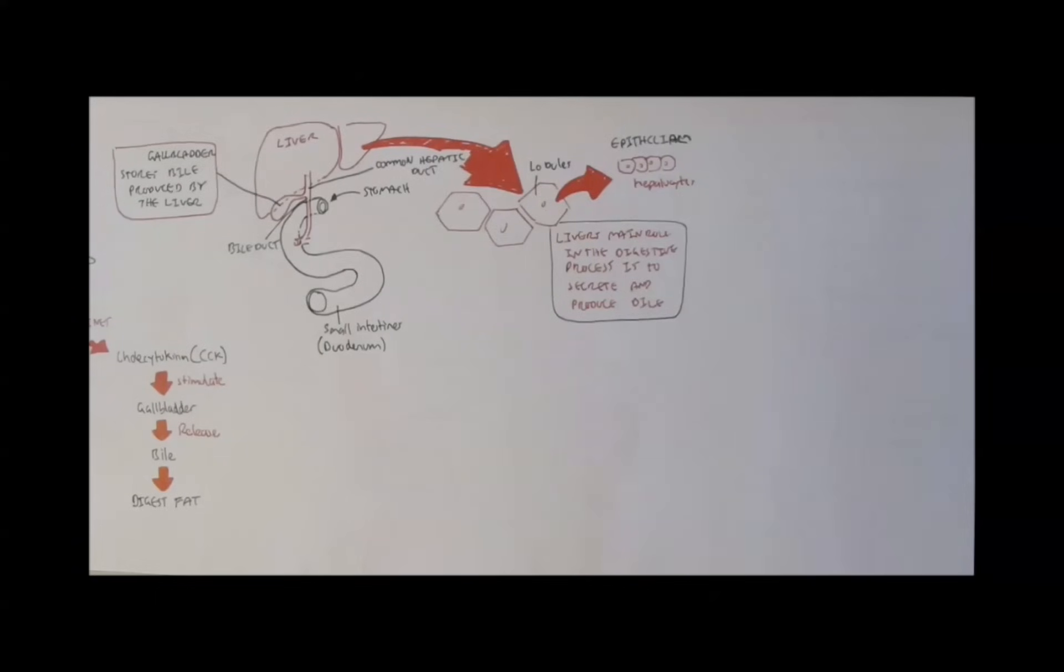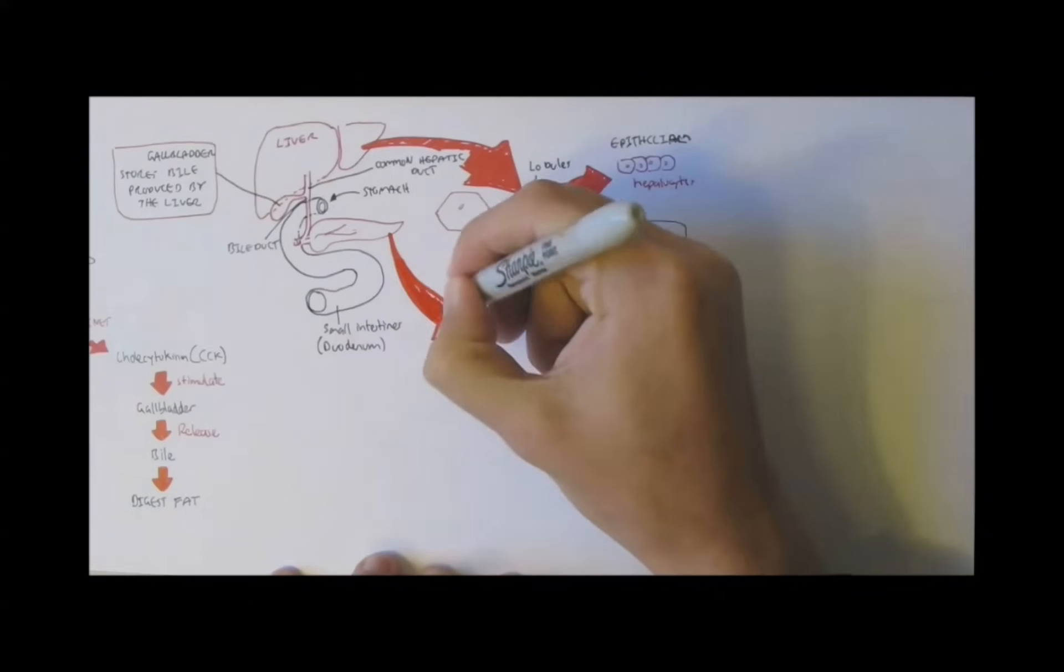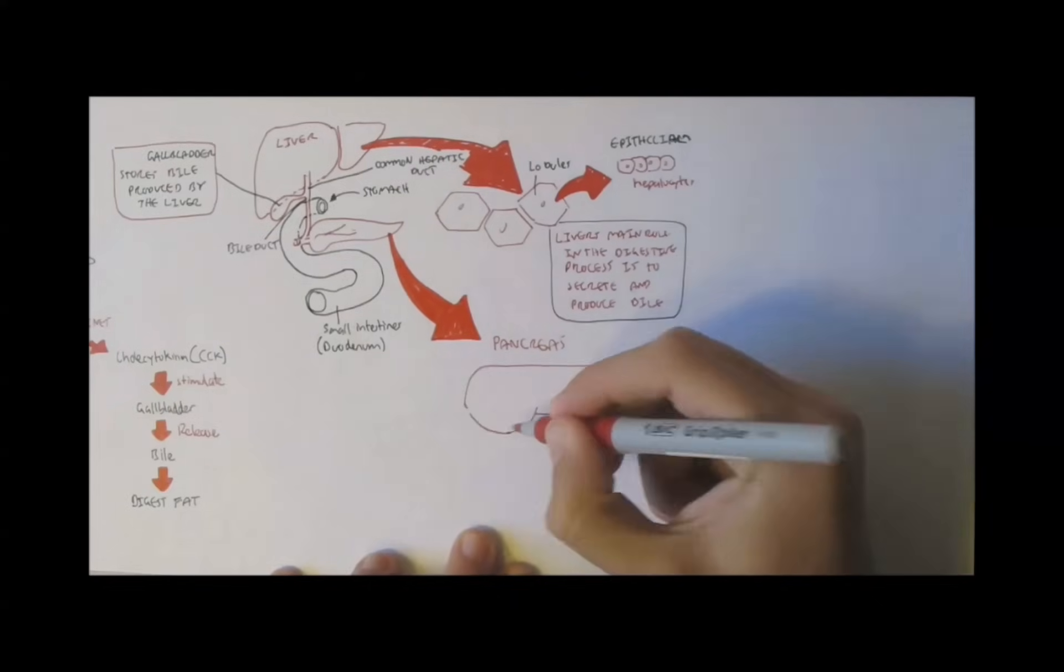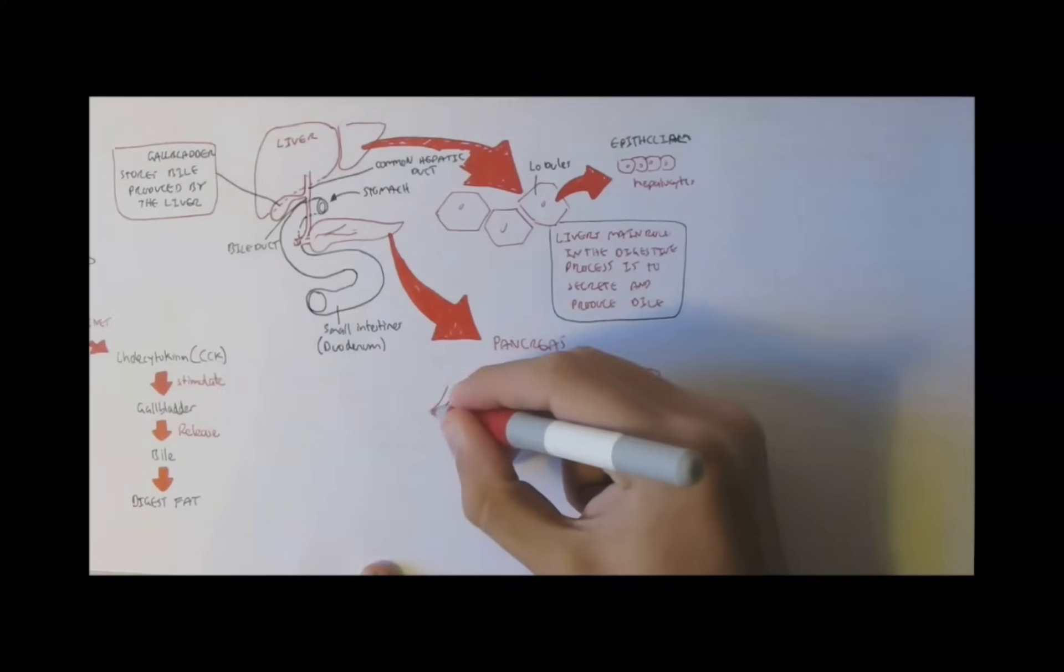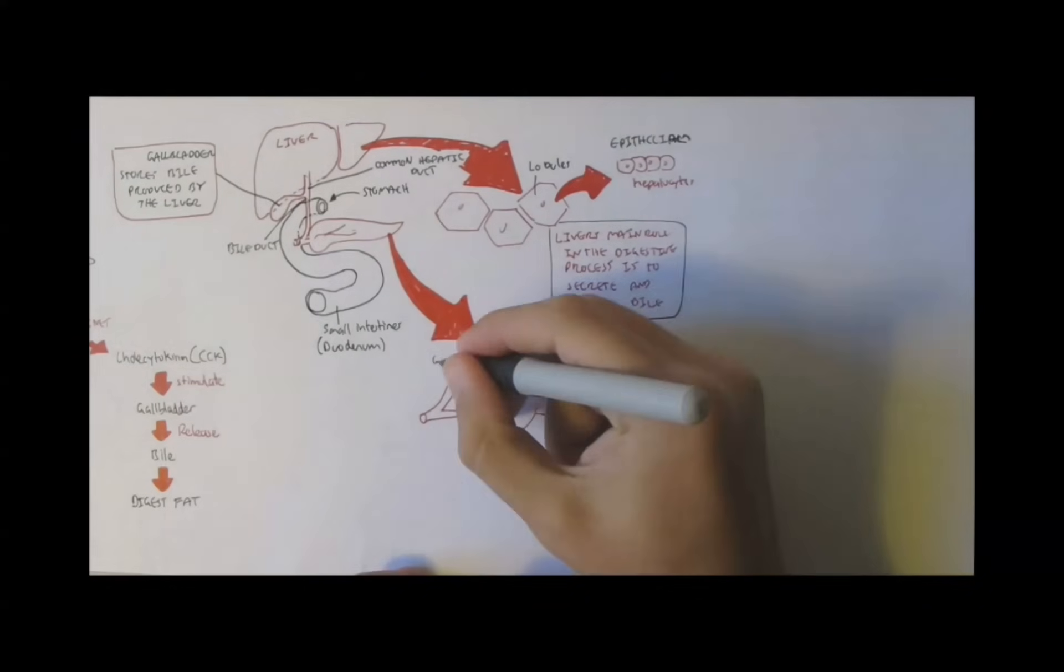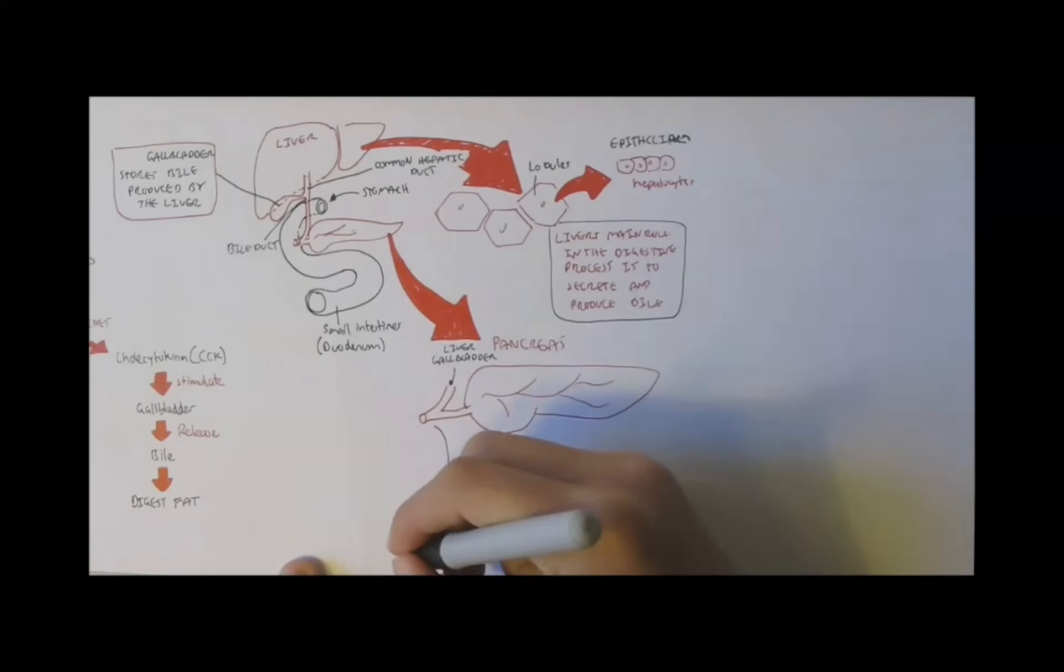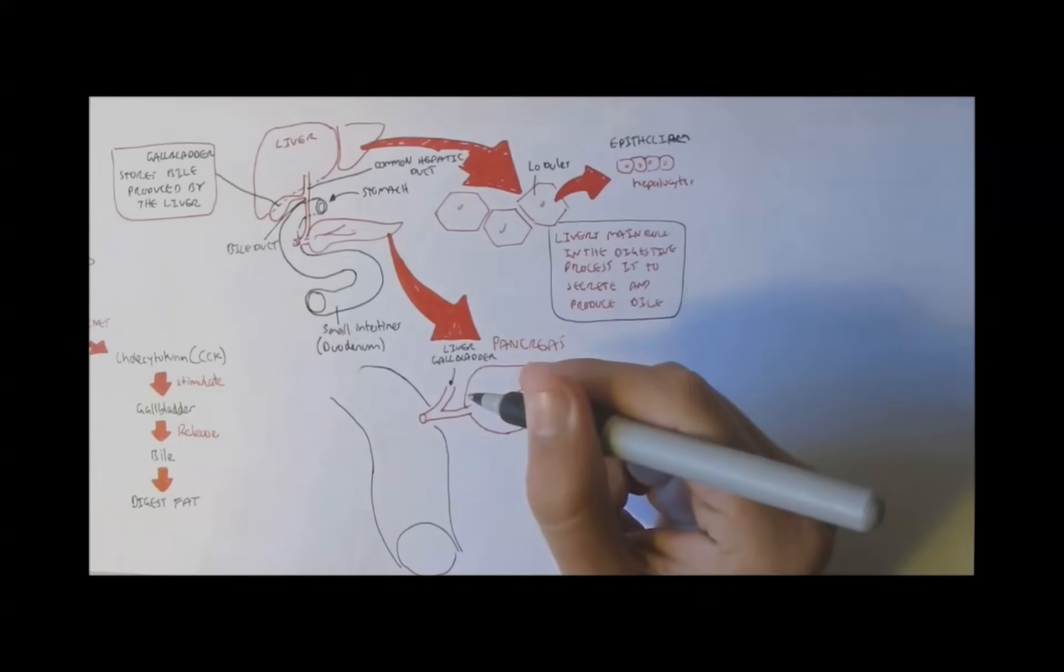And the second most important thing why the small intestine is the main site of absorption and digestion is because of the pancreas. So, this is the pancreas. Now, the duct from the liver and the gallbladder connects with the duct from the pancreas, which then connects to the duodenum of the small intestine, this area here, the small intestine.